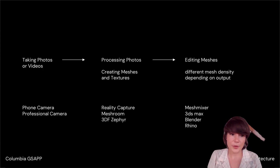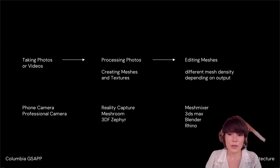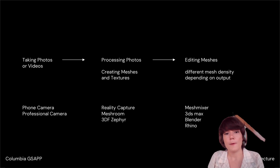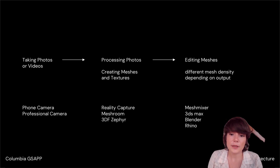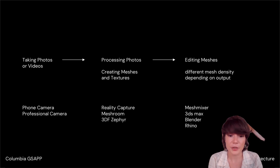The process of photogrammetry can be roughly divided into three stages. The first is taking photos or videos, which is what we're talking about in this video. Then there's processing photos to create actual three-dimensional geometry. The third stage is when we edit or post-process those meshes.